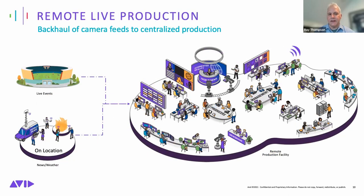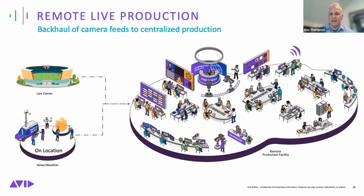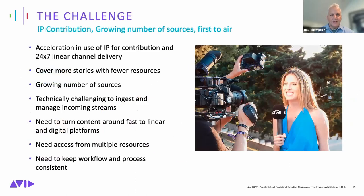Remote live production is also benefiting from IP — lowering the resources needed on site. In the past, doing events over satellite or fiber required many more people on site. Now folks have gained confidence delivering content over unmanaged networks like the open internet, embracing it for its operational and economic benefits. Media Central Stream enables this in a very open way.